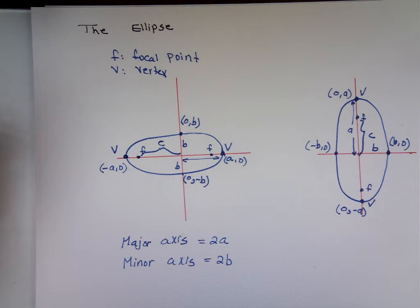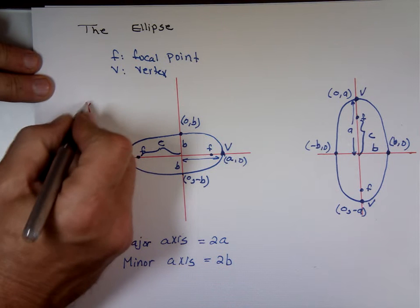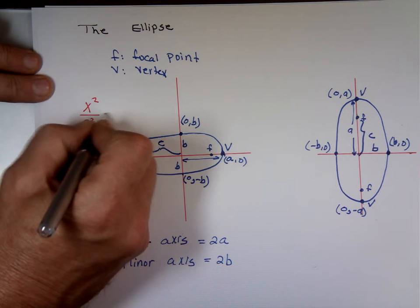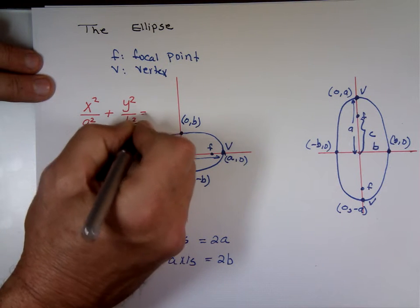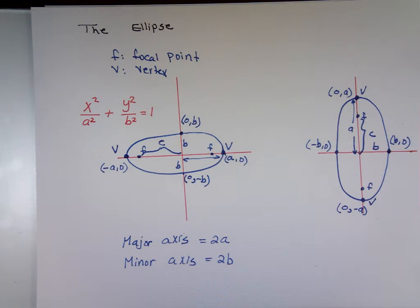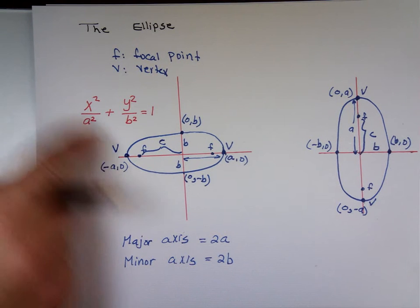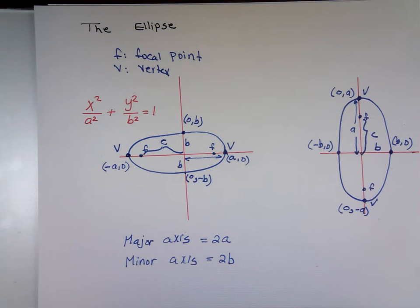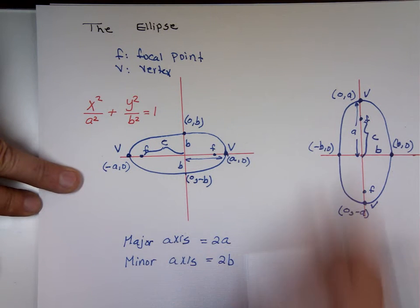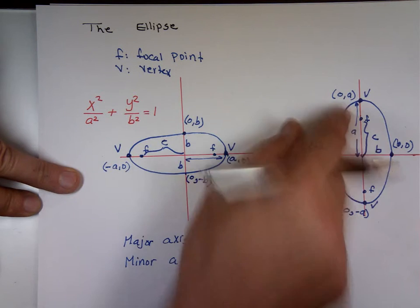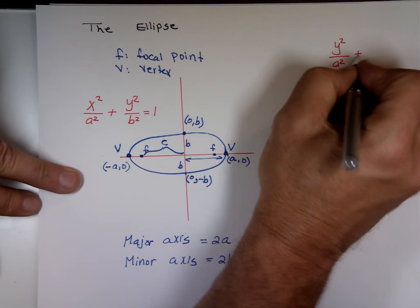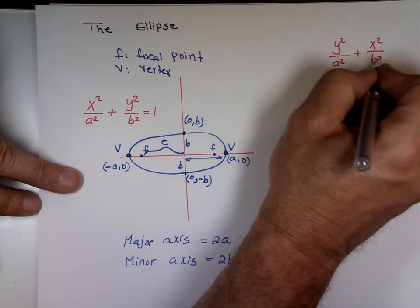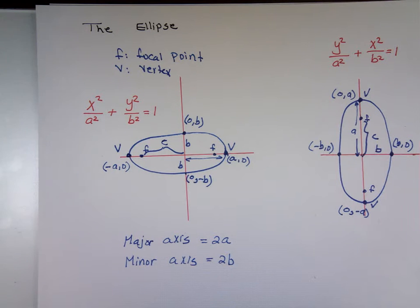Since the longer side is X, the standard form is: X squared over A squared plus Y squared over B squared equals 1. That's the form when X is the longer side. If Y is the longer side, then it's Y squared over A squared plus X squared over B squared equals 1.